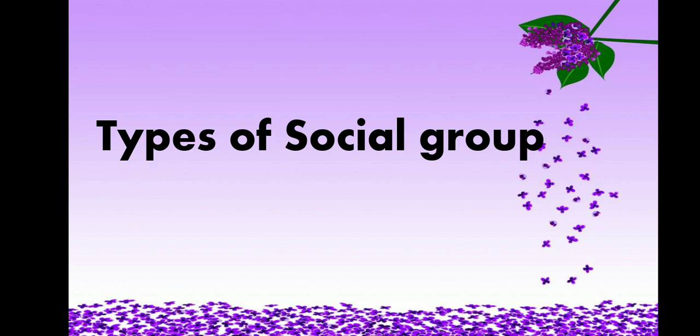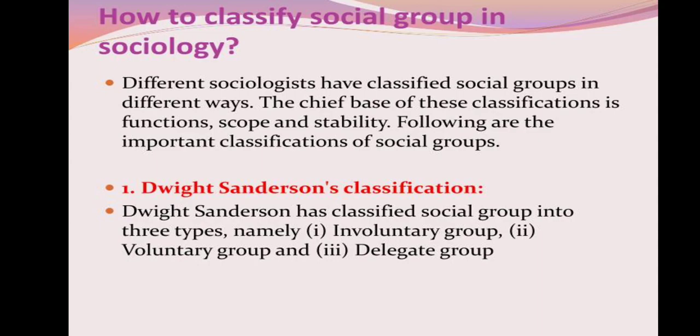Now we discuss the types of social group. Different sociologists have classified social groups in different ways. The chief basis of this classification is function, scope, and stability. Following are the important classifications of social groups.